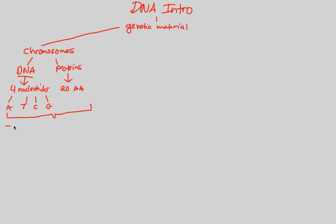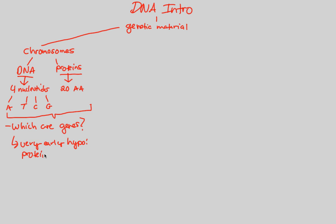We have to ask ourselves and go back in time: which are the genes? Which possess genetic information? Very early on, the hypothesis was actually for proteins, because people thought that proteins — being so important, so crucial, found all over the body, and made all the time — might be the genetic material within chromosomes. But we know it's DNA, and it's very important to figure out why and what empirical evidence tells us that.